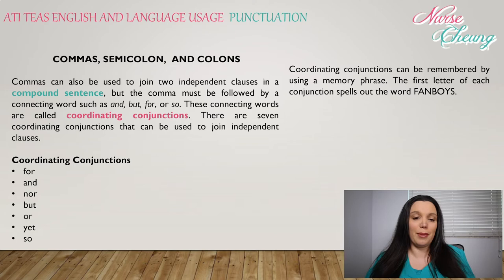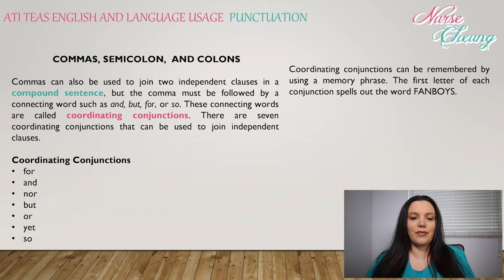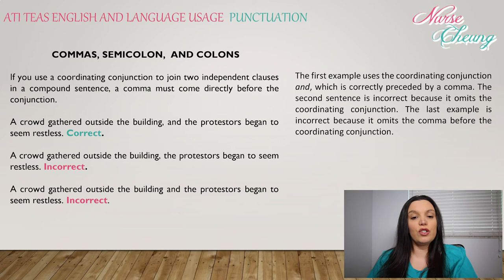Commas can also be used to join two independent clauses in a compound sentence, but the comma must be followed by connecting words such as and, but, for, or so. These connecting words are called coordinating conjunctions. There are seven: for, and, nor, but, or, yet, and so — remembered using the memory phrase FANBOYS. If you use a coordinating conjunction to join two independent clauses in a compound sentence, a comma must come directly before the conjunction.